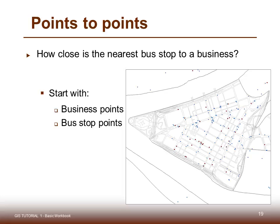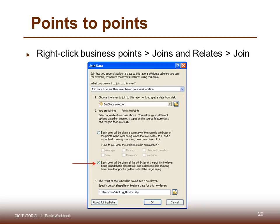The next choice is points to points to address a question like: how close is the nearest bus stop to a business? Start with business points and bus stop points. Right-click business points, Joins and Relates, then click Join. Choose the layer to join — bus stop selection — and select the bottom radio button so each point will be given all the attributes of the closest point in the layer being joined. The data will show up in your attribute table, and the distance field is added to the new layer of businesses and stops joined.